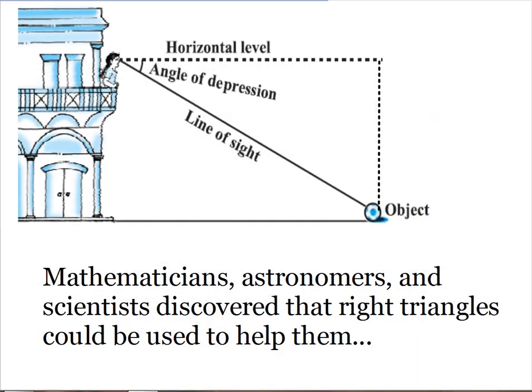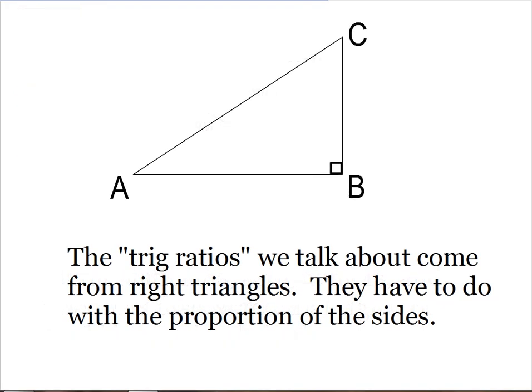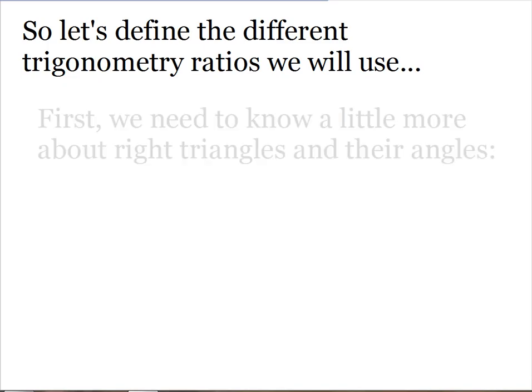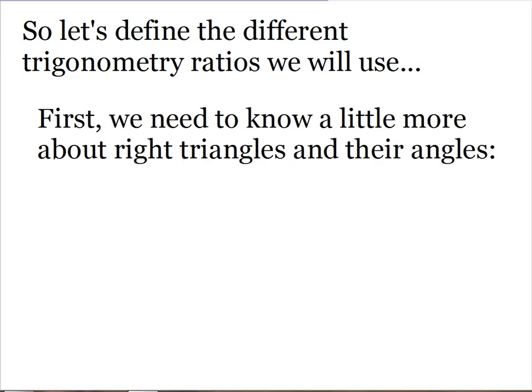So mathematicians, astronomers, and scientists discovered that right triangles could be used to help them find their unknown distances and angles. The trig ratios we talk about come from those right triangles. They have to do with the proportion of the sides. So let's define the different trigonometry ratios we're going to use. But first of all, we need to know a little more about the right triangles and their angles.